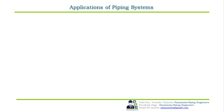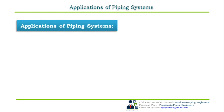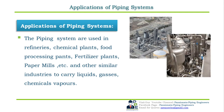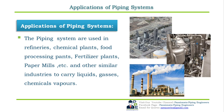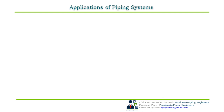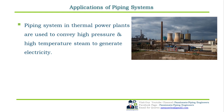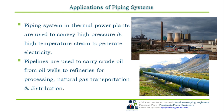The last topic is the applications of the piping system in various industries. Piping systems are used in refineries, chemical plants, food processing plants, fertilizer plants, paper mills, and other similar industries to carry liquids, gases, and chemical vapors from one point to another. In thermal power plants, piping systems convey high-pressure and high-temperature steam to generate electricity. Pipelines are also used to carry crude oil from oil wells to refineries, and for natural gas transportation and distribution.